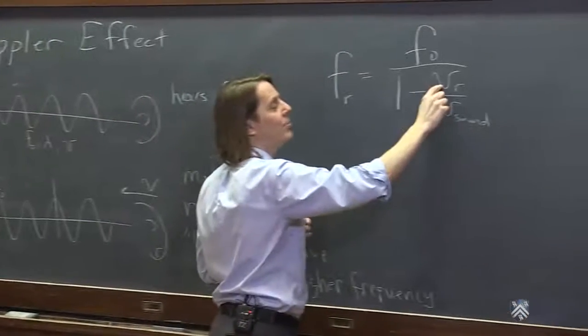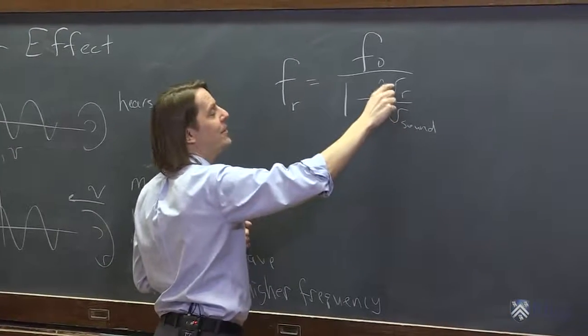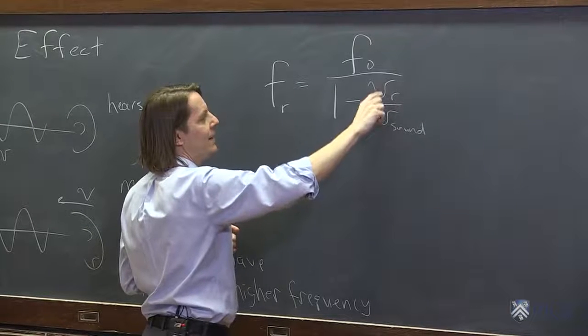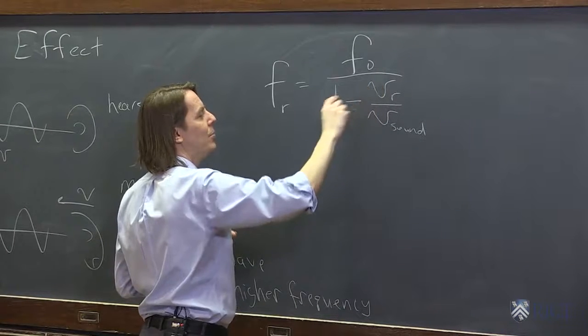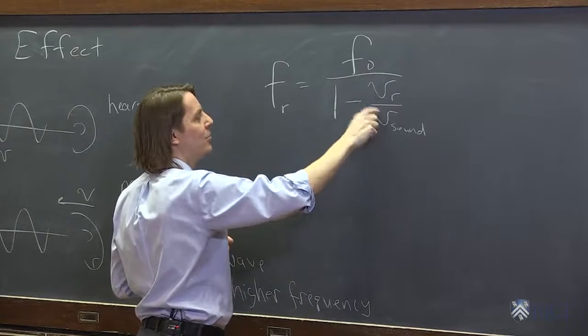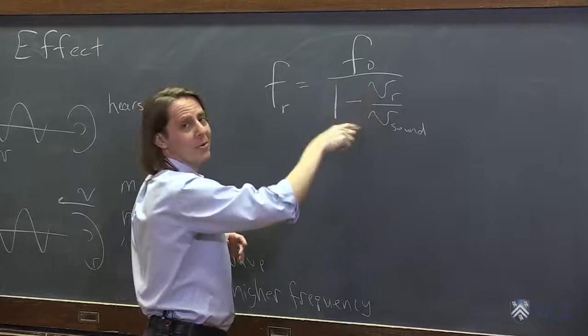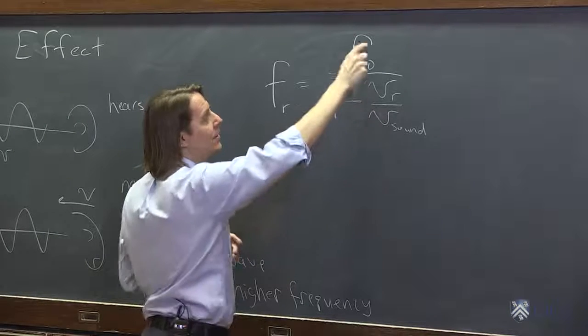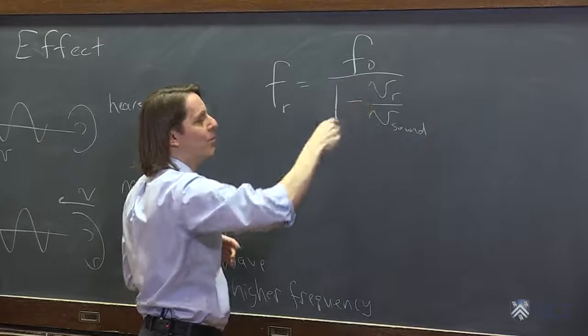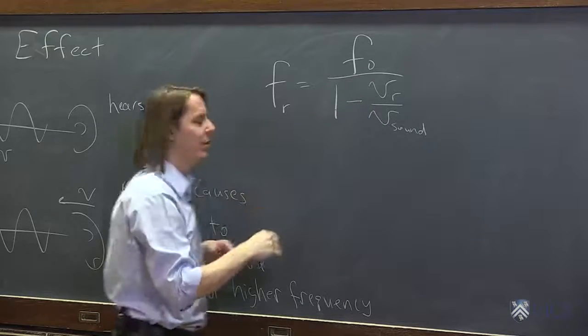But when the train goes away from you, suddenly this becomes a small negative number. One minus a small negative number is one plus the small number, so this is a little bit more than one. F naught over something a little more than one means the frequency goes down.